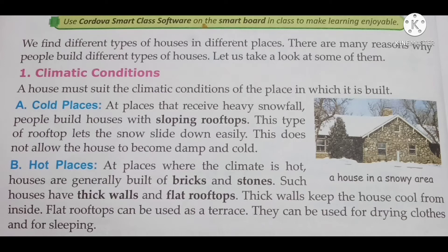First is climatic conditions. A house must suit the climatic conditions of the place in which it is built. हर जगह की climate अलग होती है — कहीं गर्मी होती है, कहीं ठंड होती है, कहीं बर्फ पड़ती है या कहीं बहुत ज़्यादा बारिश पड़ती है। So, घर बनाने से पहले वहाँ की climatic condition देखी जाती है और उसी के according घर बनाया जाता है।